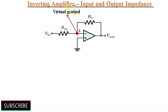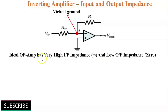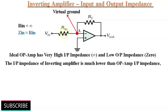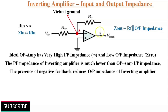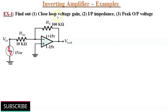Now we will have a brief discussion about the input and output impedance of the inverting amplifier. The ideal op-amp has extremely high or infinite input impedance and very low or zero output impedance. But Rin is always less than infinity. The input voltage passing through input resistance Rin is going to virtual ground. That is why the input impedance for the inverting amplifier Zin is equal to Rin. The value of Rin will always be much lower than the input impedance of the op-amp, so the overall input impedance of an inverting amplifier will be much lower than the op-amp's input impedance. The output impedance of an inverting amplifier Zout is the parallel combination of feedback resistor RF and the output impedance of the op-amp itself. The presence of negative feedback reduces the output impedance of the amplifier to a value less than the output impedance of the op-amp.